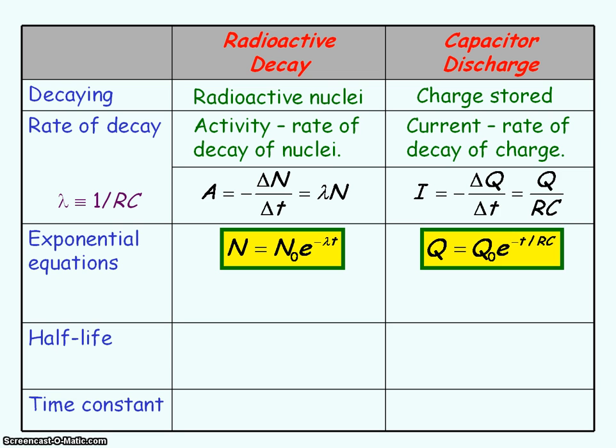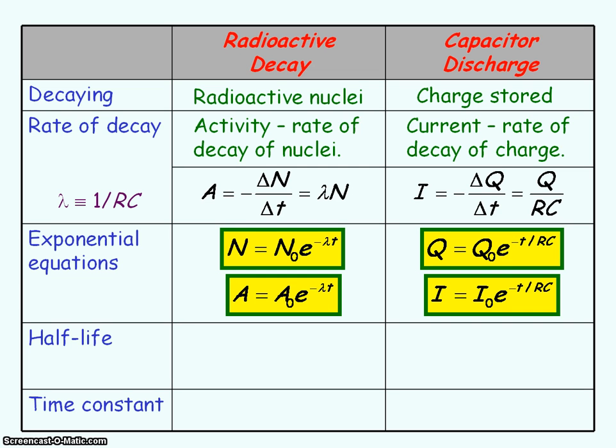The exponential equations for radioactive decay and capacitor discharge for activity and current follow directly from these equivalencies.